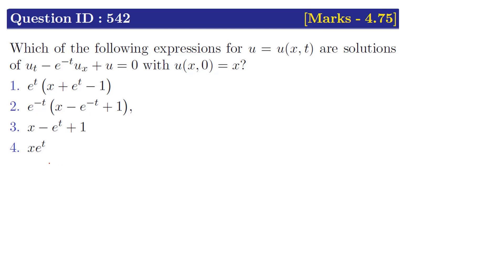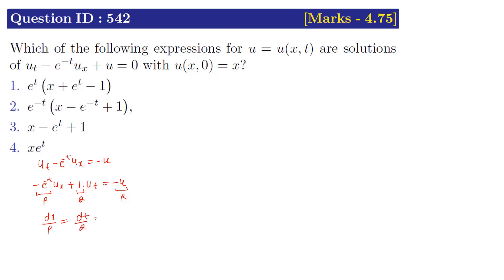The given PDE is rewritten as u_t minus e^(−t) · u_x = −u, which is further written as −e^(−t) · u_x + 1 · u_t = −u. Here p = −e^(−t), q = 1, and r = −u. Lagrange's auxiliary equations are dx/p = dt/q = du/r. Substituting the values: dx/(−e^(−t)) = dt/1 = du/(−u).